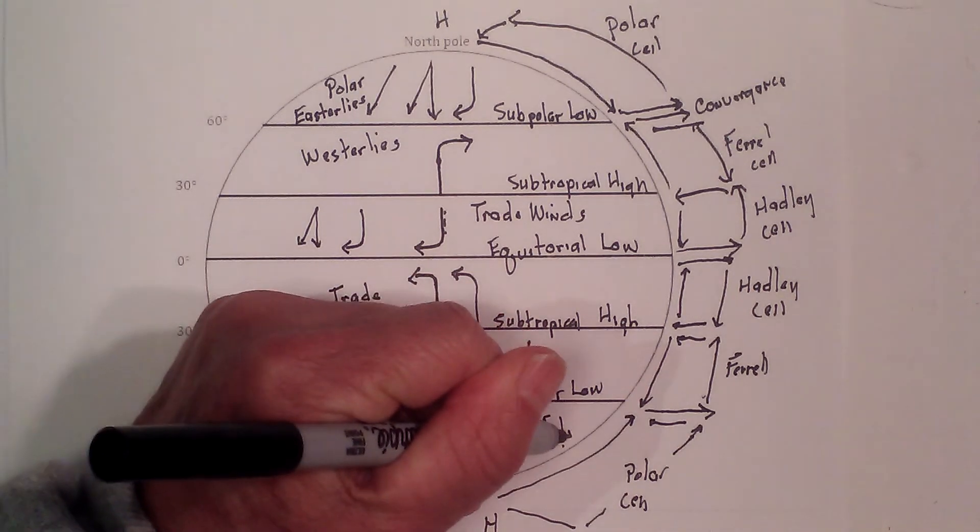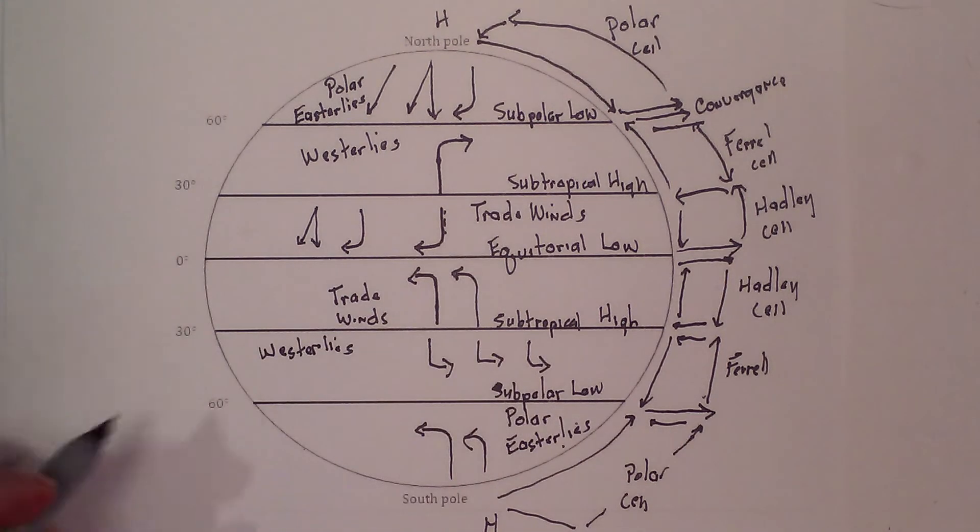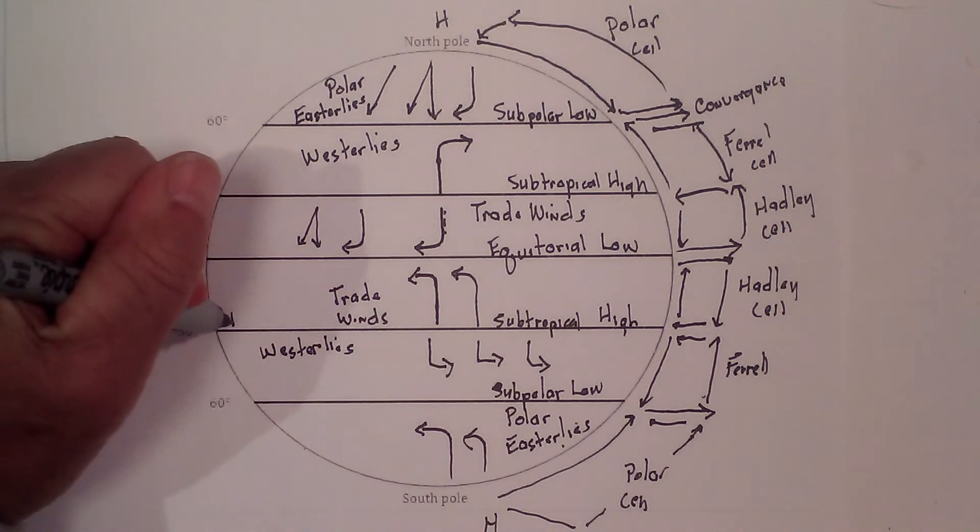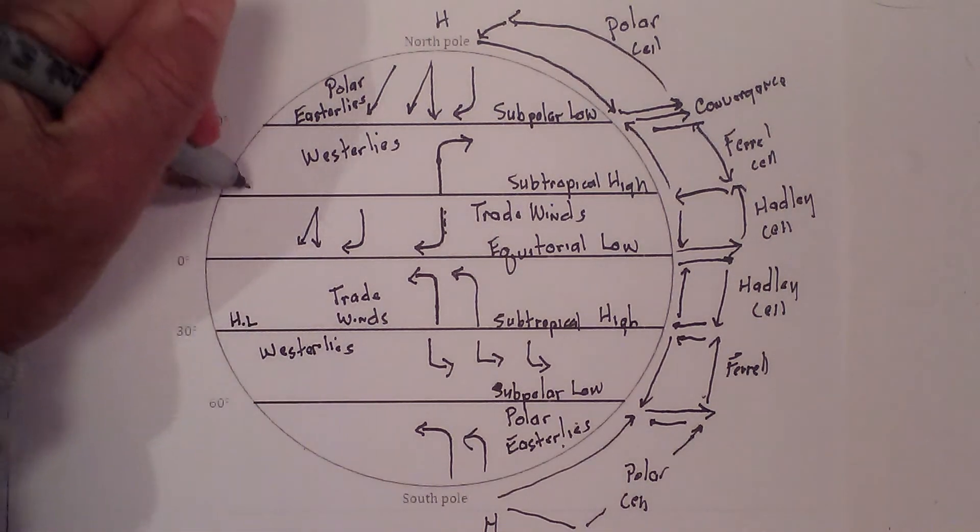Now we have a couple other things that you may be aware of. This 30 degrees. These are sometimes called the horse latitudes. Let's call these HL.